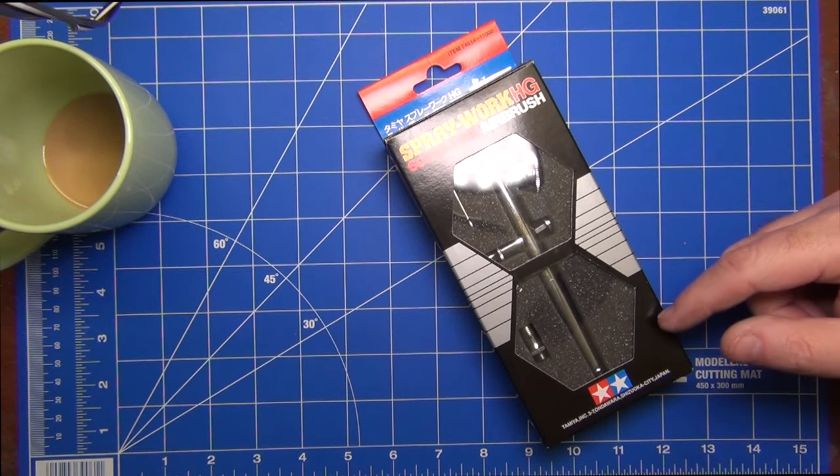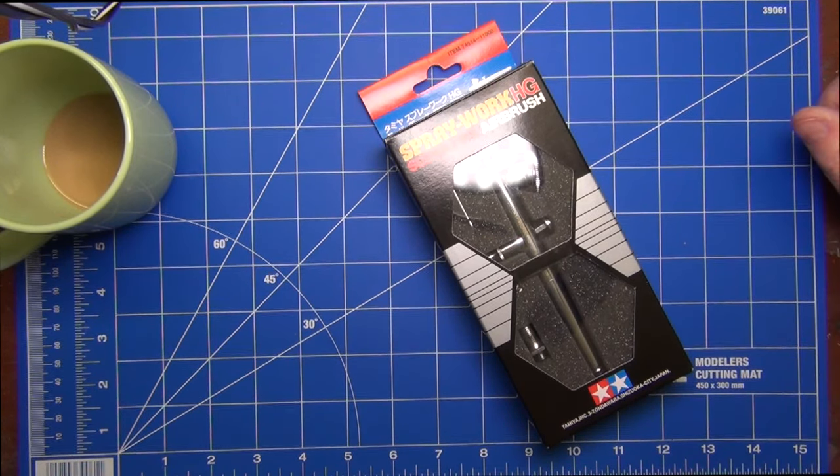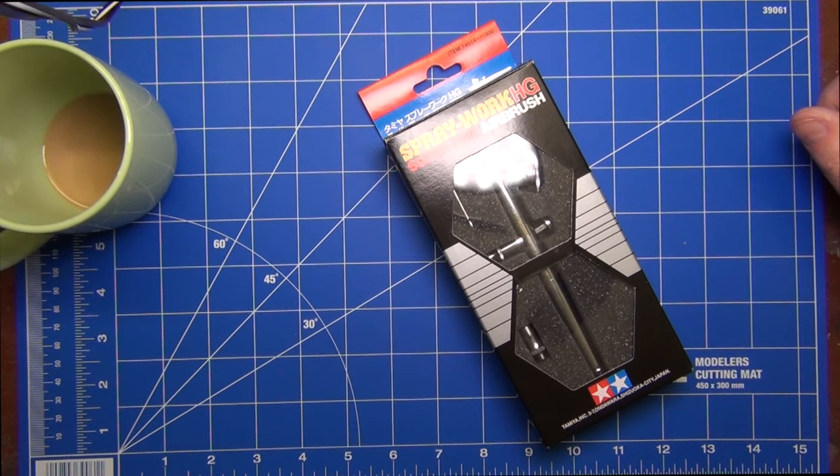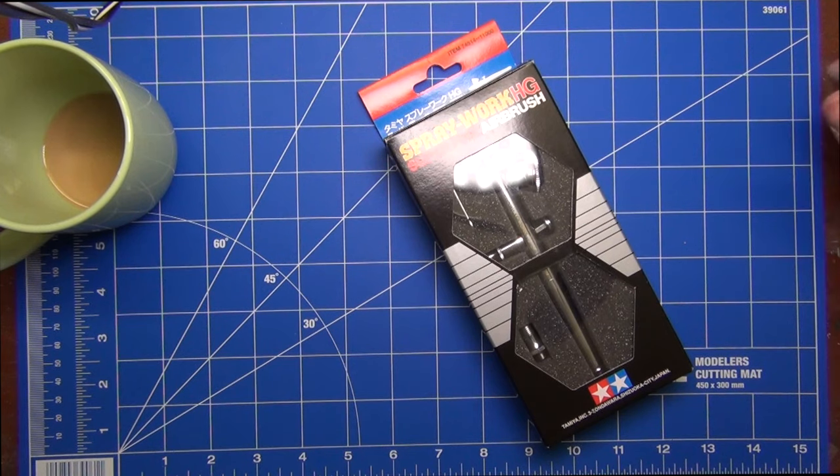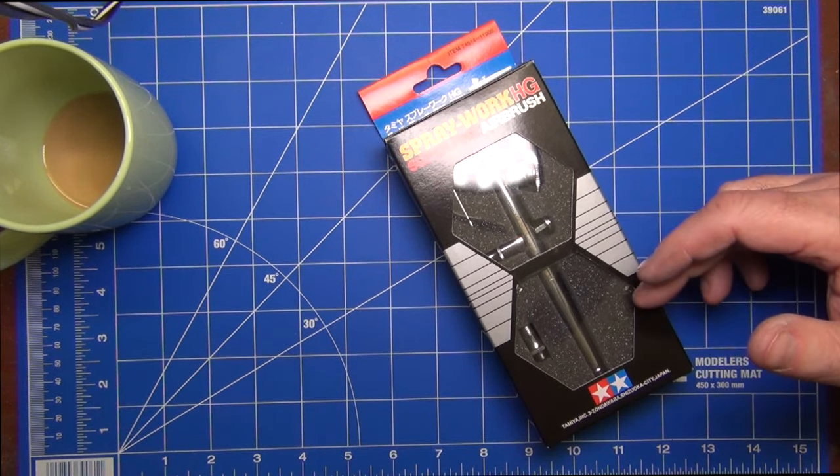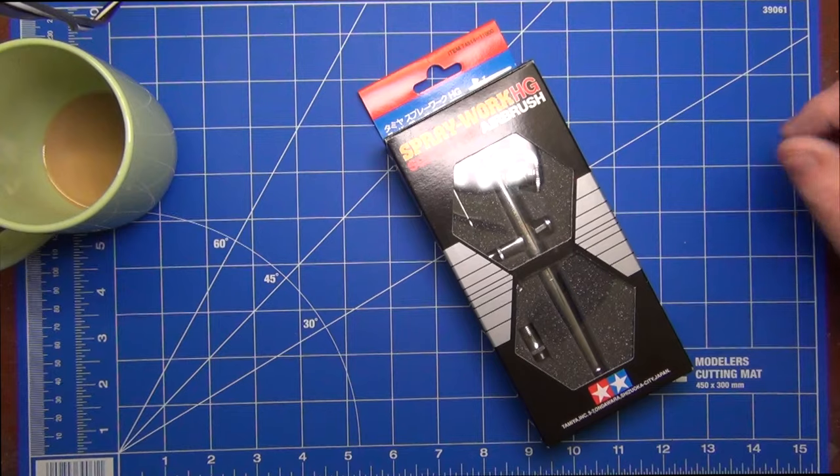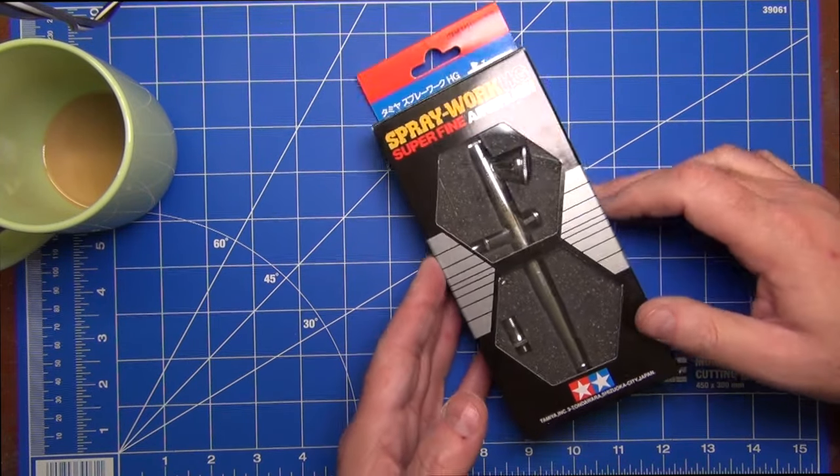They also sell a range of slightly dearer airbrushes with the HG moniker, which is high grade, and these particular airbrushes are made in Japan. They come in 0.2 and 0.3 millimeter needles and all sorts of bits and pieces. Let's have a look at this one - generally speaking they're all fairly similar.